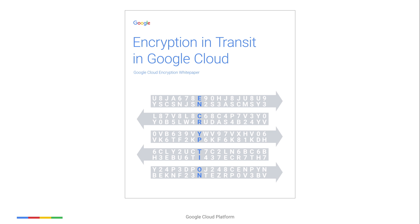Data in transit inside a physical boundary controlled by Google is authenticated, but not necessarily encrypted, because rigorous physical security measures are in place by default. To learn more, read our white paper, Encryption in Transit in Google Cloud.